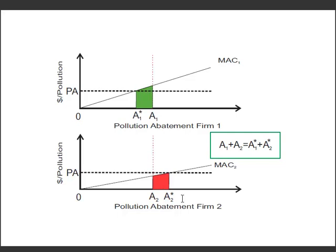Both firms are better off than at the original standard where A1 equaled A2, and society as a whole is better off because we've reduced the total cost to achieve a pollution reduction outcome. So those are the three main options that economists talk about in terms of pollution policy: command and control, taxes, and tradable permits. These are all used in different real-world scenarios, and you'll see them come up repeatedly in Chapter 15.